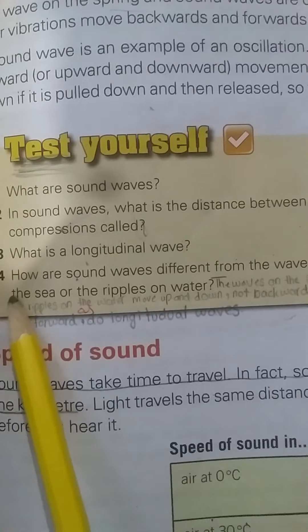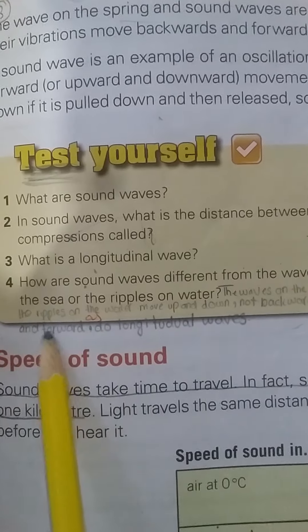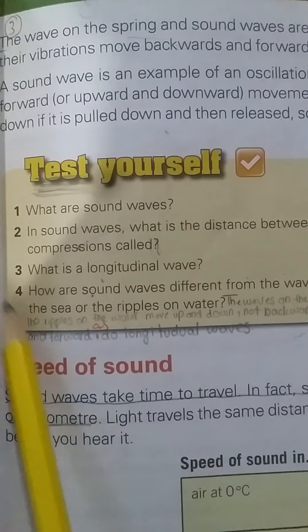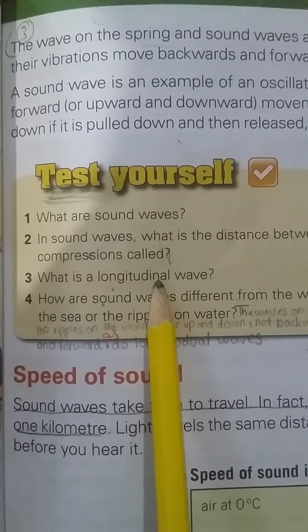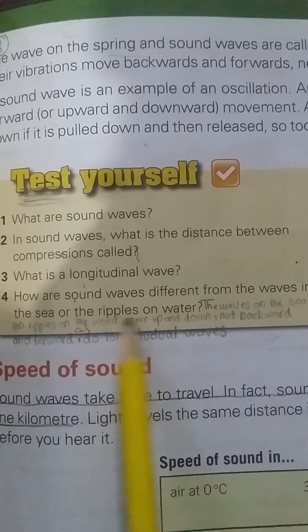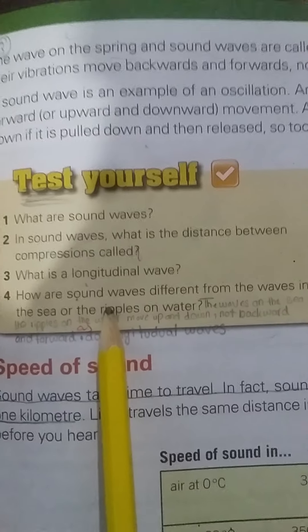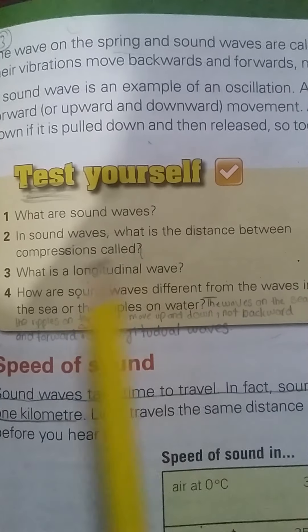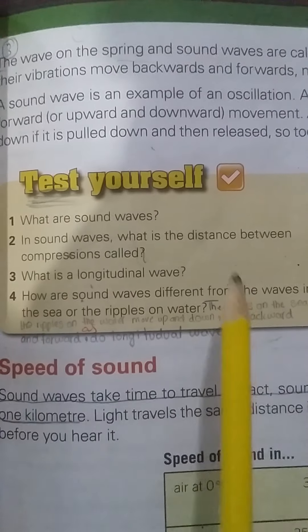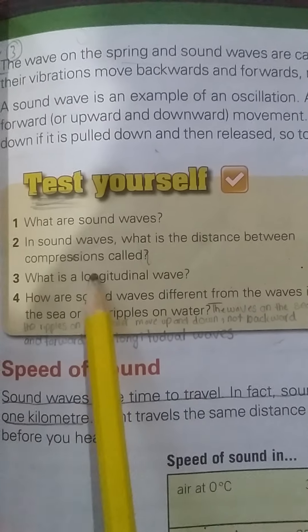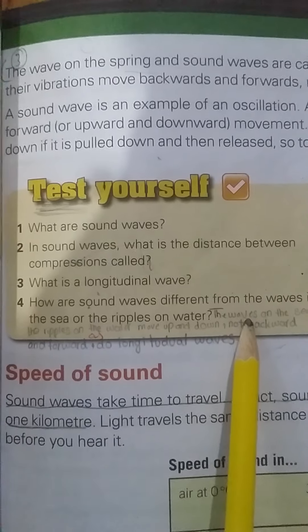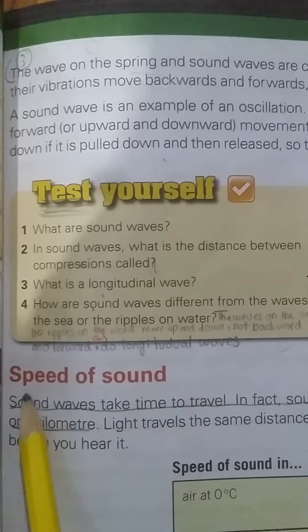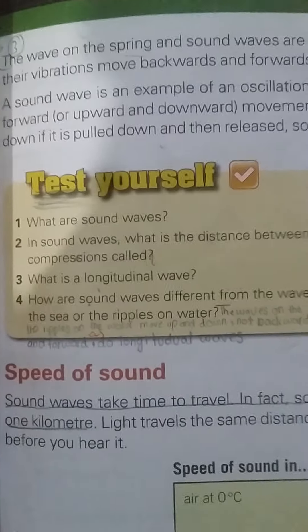Third: what are longitudinal waves? Longitudinal waves are waves that move forward and backward, not up and down, like sound waves on a spring. Fourth: how are sound waves different from waves in the sea? Sound waves are longitudinal waves, but in the sea the waves move up and down, so they are not longitudinal waves. That's all — hope it's clear. Thank you.